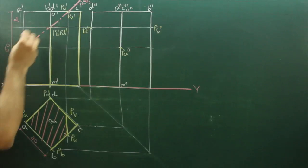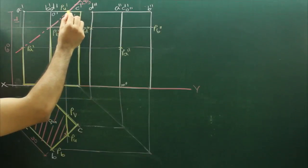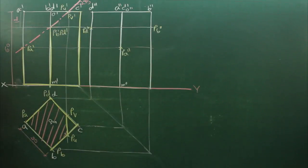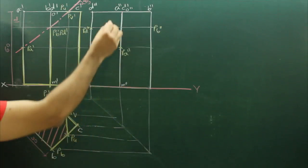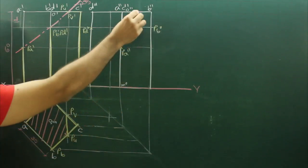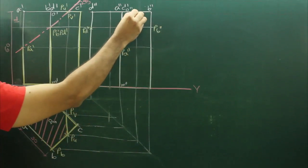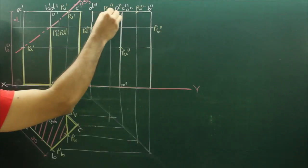Now PU dash and PV dash, that we cannot project from front view. So whenever we can't project from front view, we should project from top view. PU-PV. So this will be PU double dash, this is PV double dash.